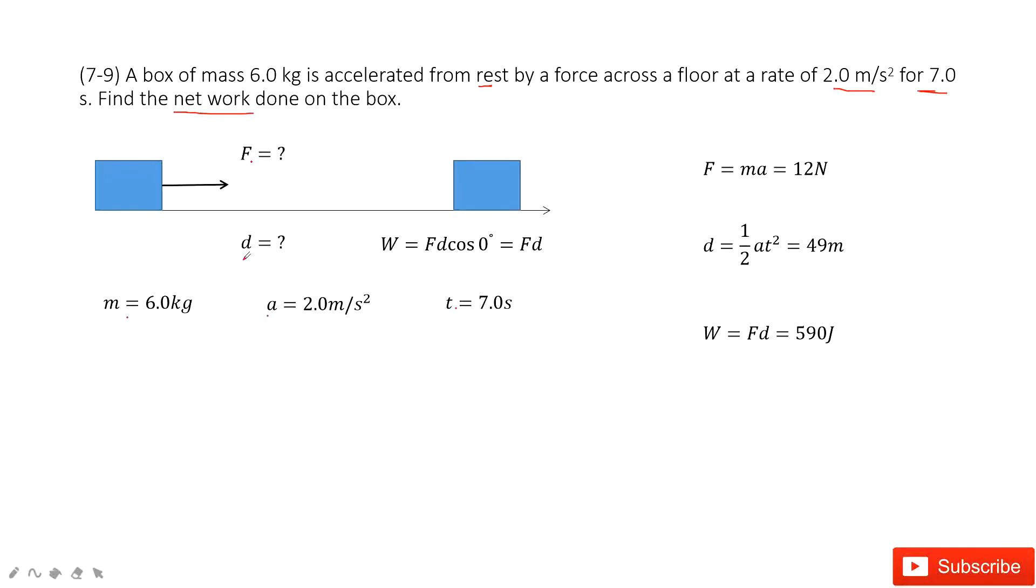And also the distance it covered. So the work becomes F·d·cos(θ). This theta becomes zero because F and d are along the x coordinate. In this way it becomes F times d; this is the net work.